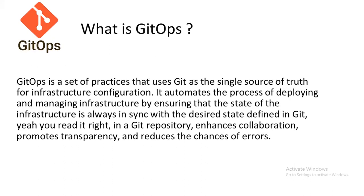GitOps is a set of practices that uses Git as the single source of truth for infrastructure configuration. It automates the process of deploying and managing infrastructure by ensuring that the state of the infrastructure is always in sync with the desired state defined in Git. This enhances collaboration, promotes transparency, and reduces the chances of errors.